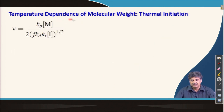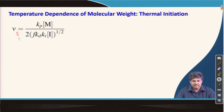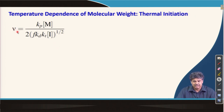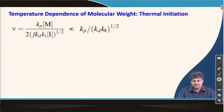Now let us discuss how temperature affects molecular weight in Radical Chain Polymerization, starting with thermal initiation. The kinetic chain length expression derived earlier is related to molecular weight and degree of polymerization, and it is proportional to the relevant rate constants. How temperature affects those rate constants determines how temperature affects the degree of polymerization and molecular weight.